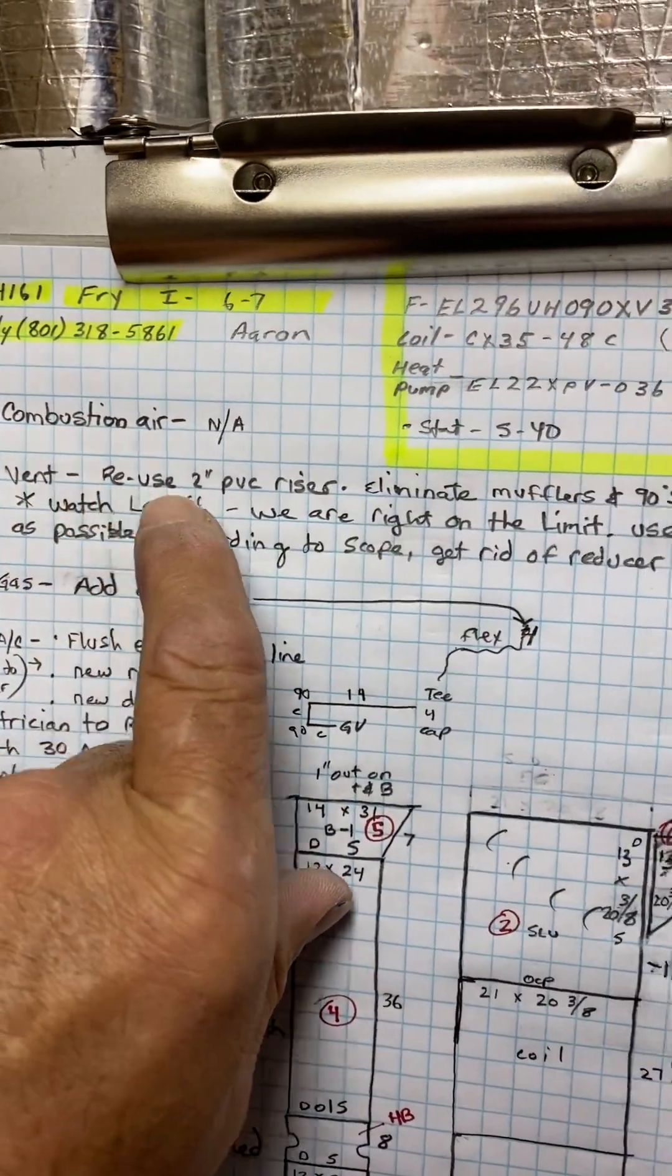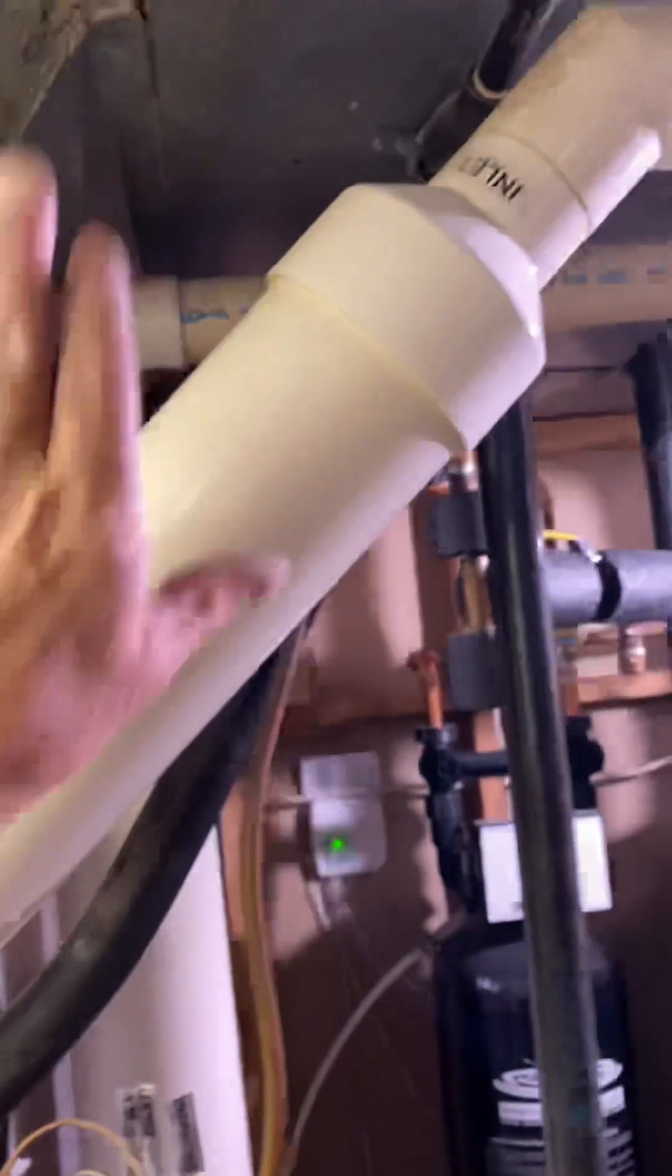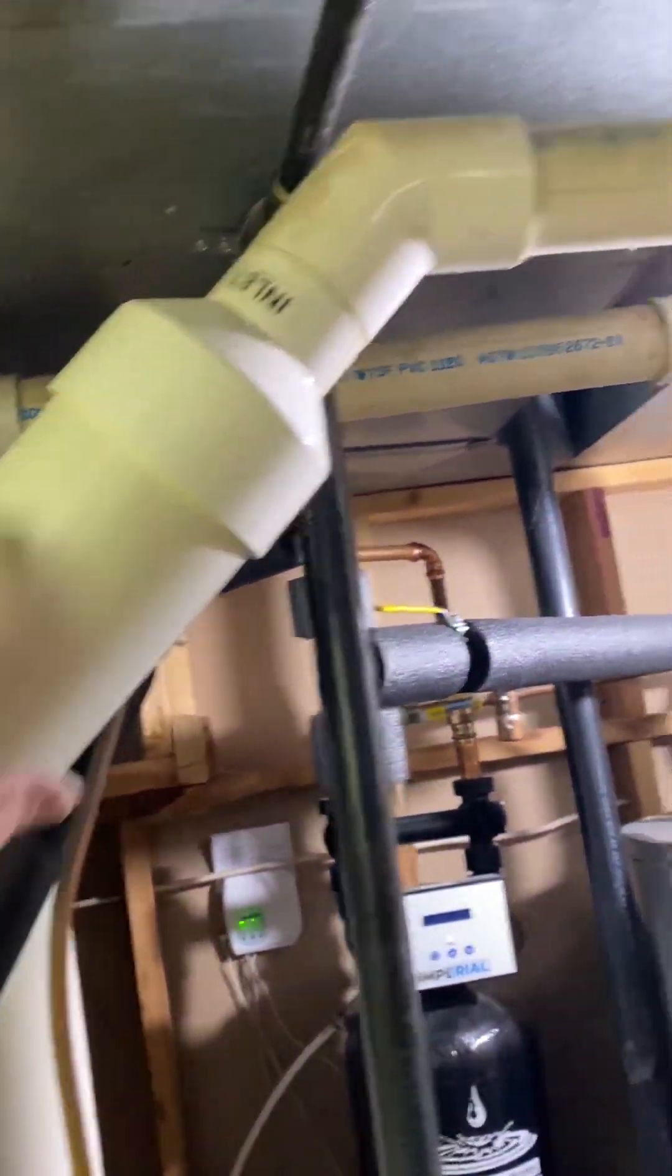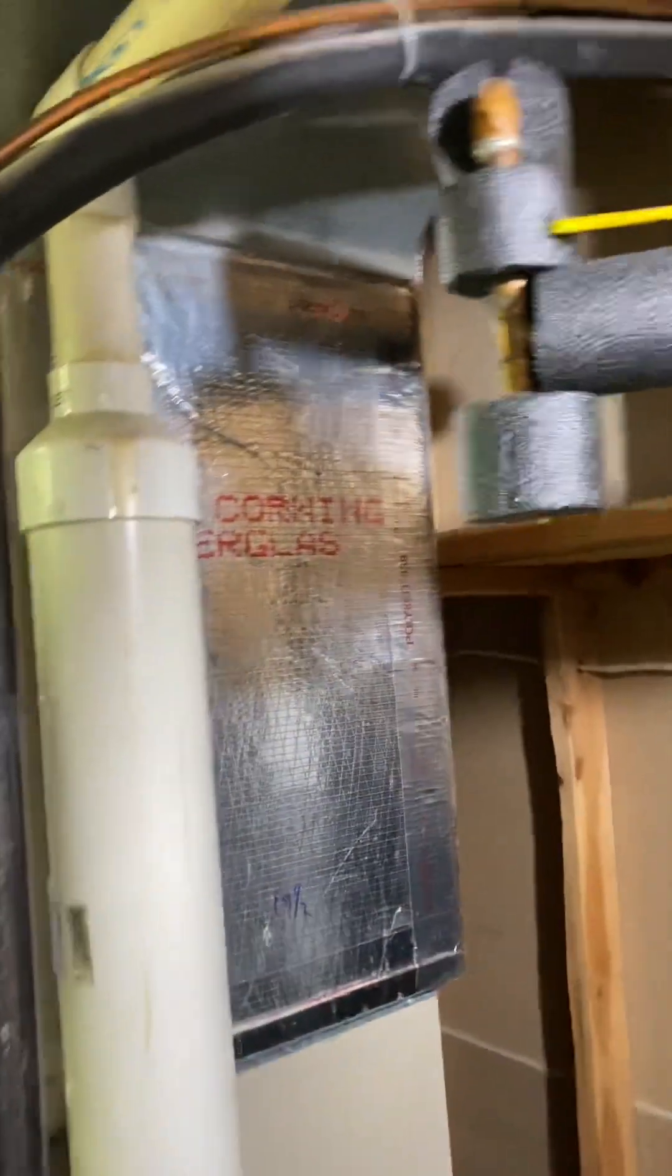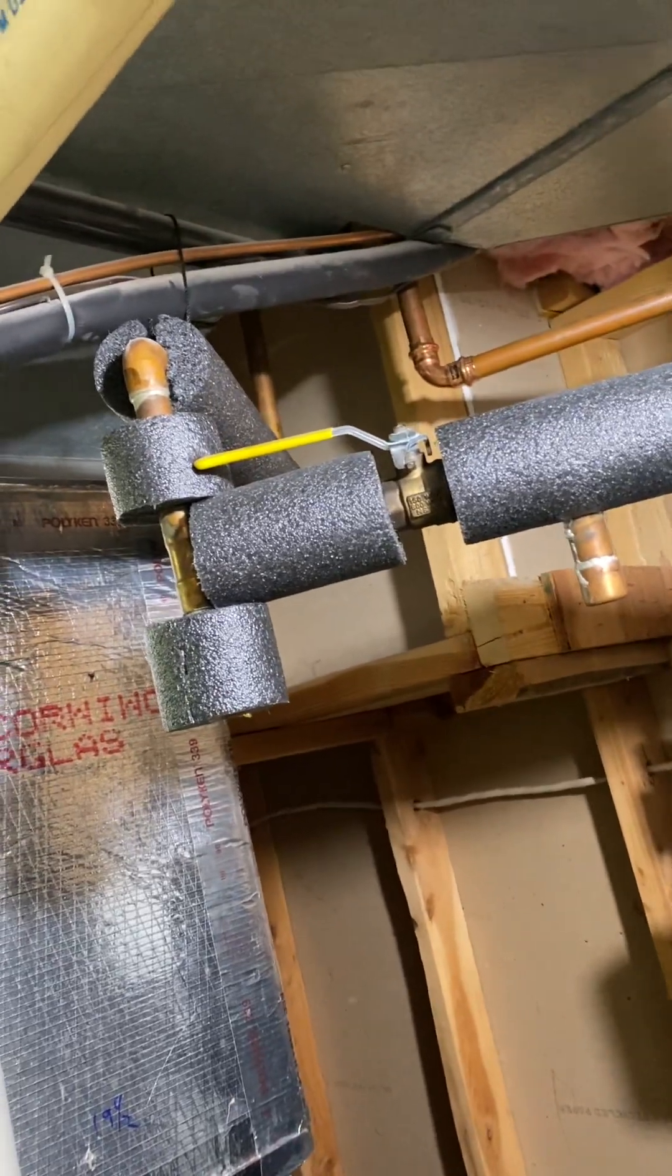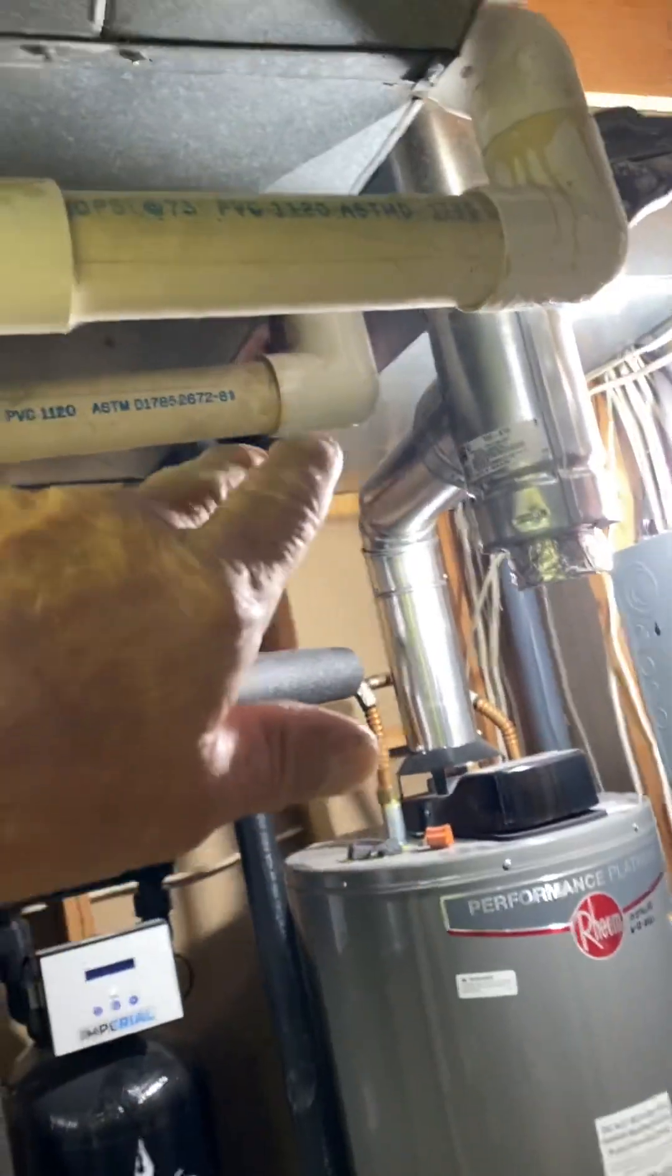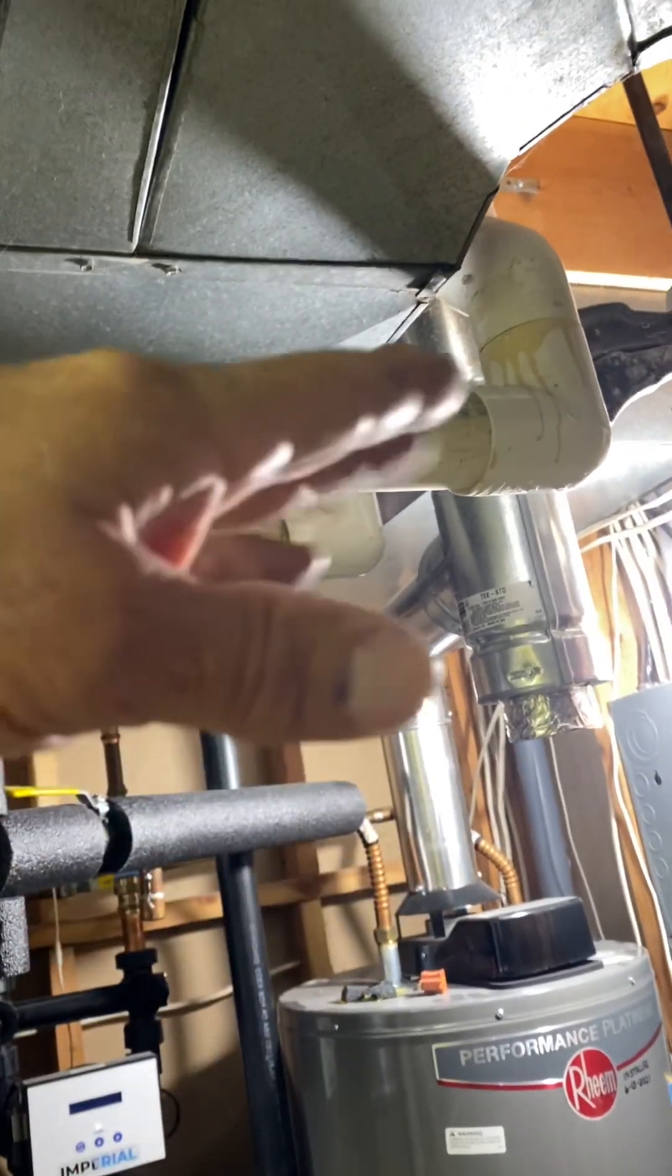So your vent, you're going to reuse the 2 inch PVC. That goes up through the roof, but you're going to cut out these tight radius 90s and the mufflers. So cut it out. I gave you two couplings. You're really, really close on length.